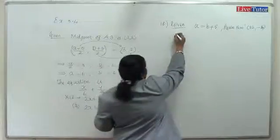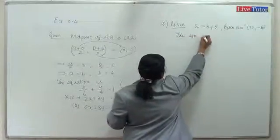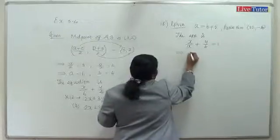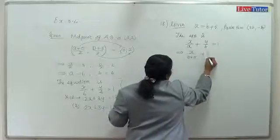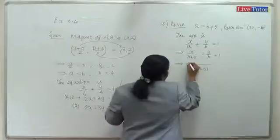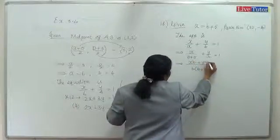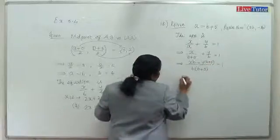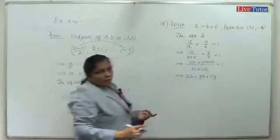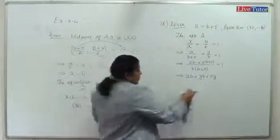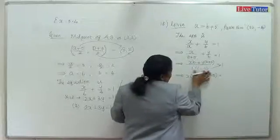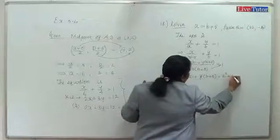The intercept form equation is x by a plus y by b equals 1. Substituting a equals b plus 5, this becomes x by (b plus 5) plus y by b equals 1. Multiplying through by b(b+5), we get an expression in b.